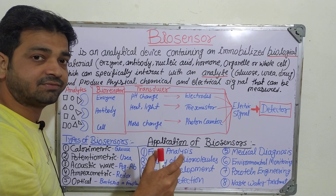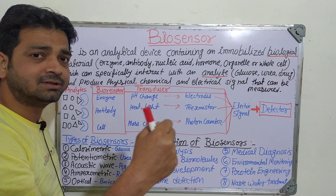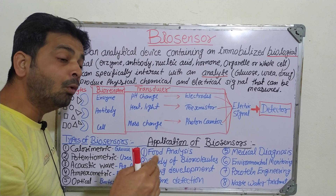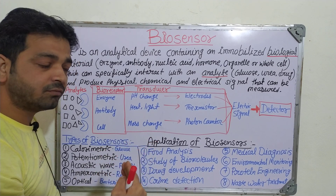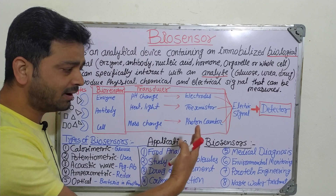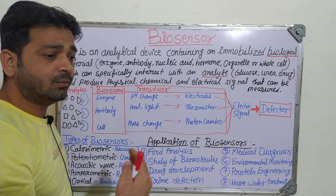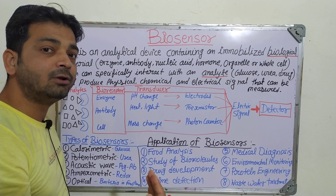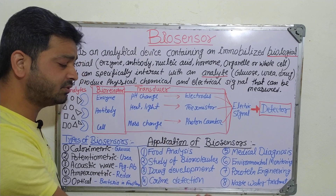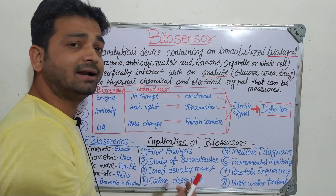For drug development, biosensors help understand existing drugs — for example, morphine, which requires ether bridges, tertiary nitrogen groups, and hydroxyl groups for analgesic activity. We can further modify such structures to get more potent activity. Biosensors also assist in isolation, extraction, and biological screening. In crime detection, forensic labs use biosensors to analyze biological materials like blood and hair collected from crime scenes to trace criminals.